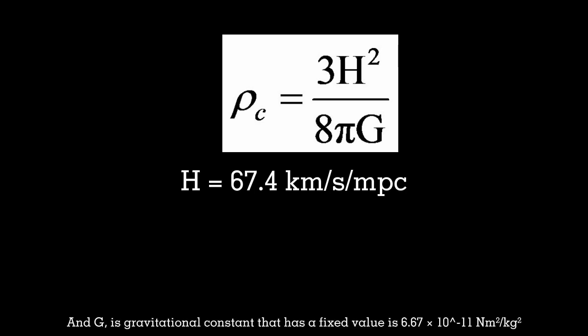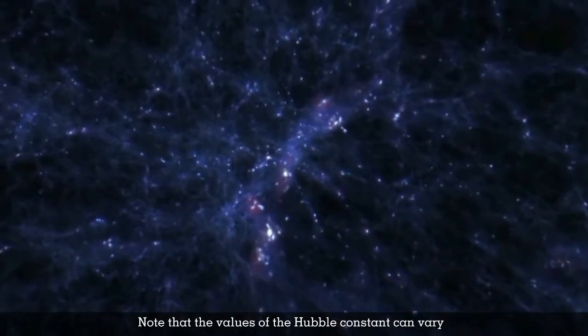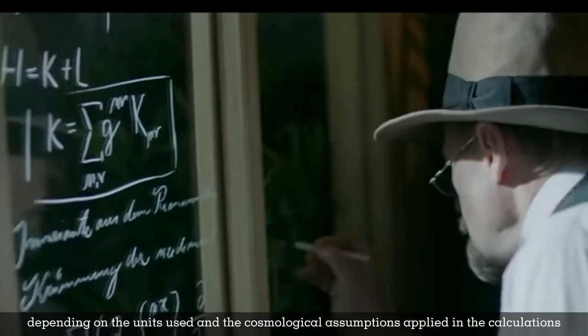H is Hubble constant with currently value is 67.4 kilometers per second per megaparsec, and G is gravitational constant that has a fixed value is 6.67 × 10^-11 newton meters squared per kilogram squared. Note that the values of the Hubble constant can vary depending on the units used and the cosmological assumptions applied in the calculations.